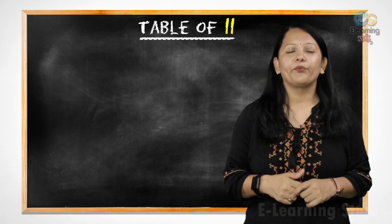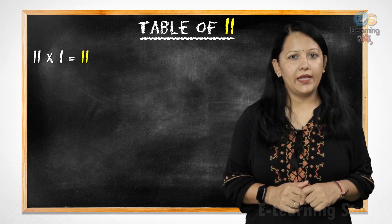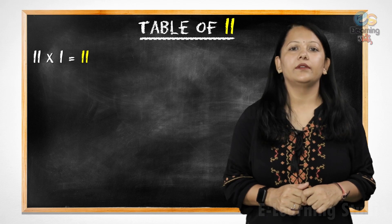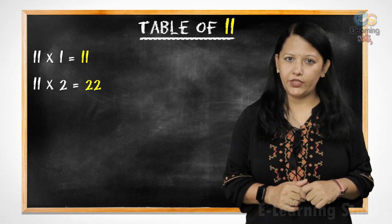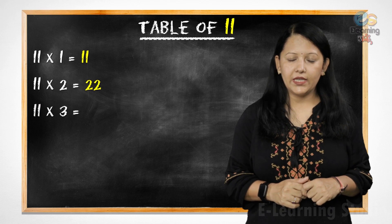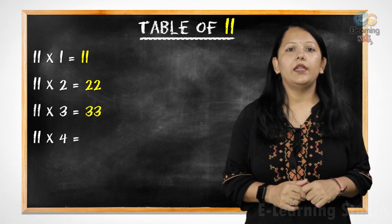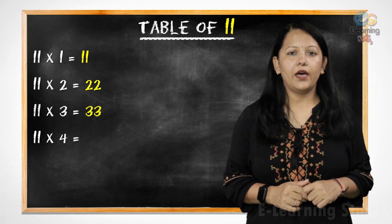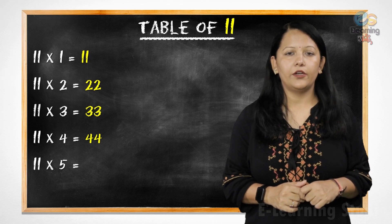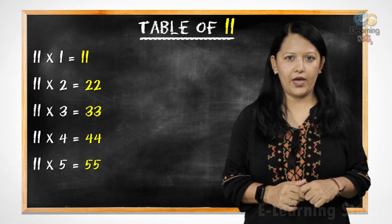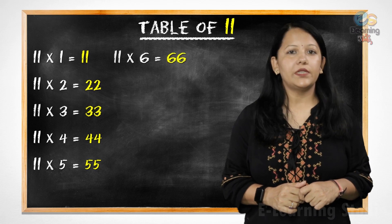Let's revise it. 11 1s are 11, 11 2s are 22, 11 3s are 33, 11 4s are 44, 11 5s are 55, 11 6s are 66.